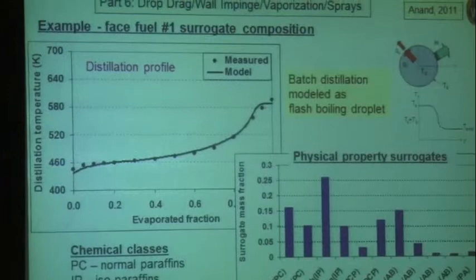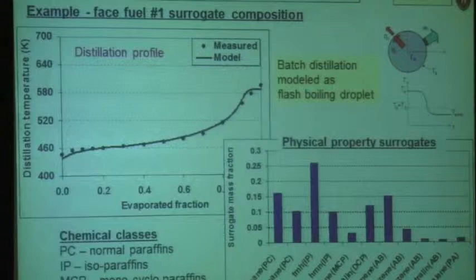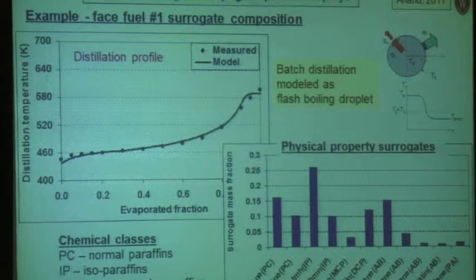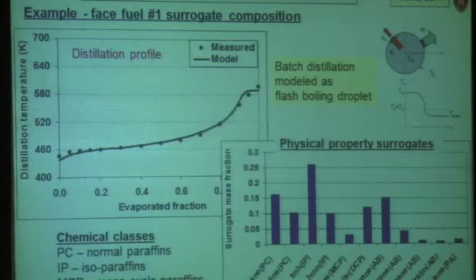Here's the FACE Phase 1 fuel as an example. We match the distillation curve by actually calculating the vaporization of a droplet undergoing flash boiling, and look at the evaporated fraction as a function of temperature during heat-up of the droplet. Here you see the surrogates we use to match the physical properties.